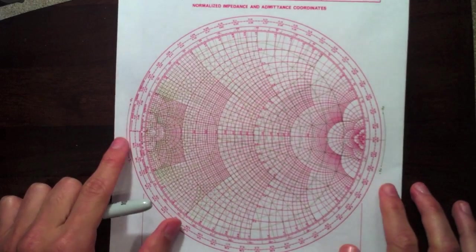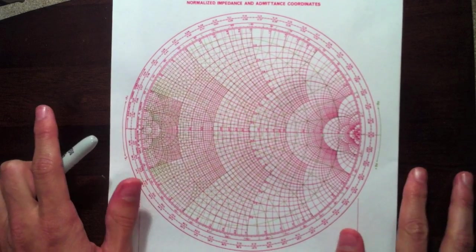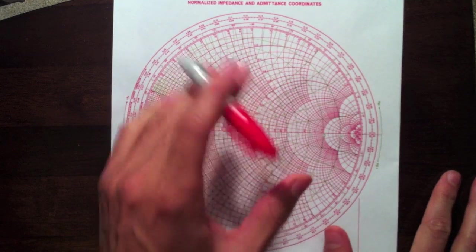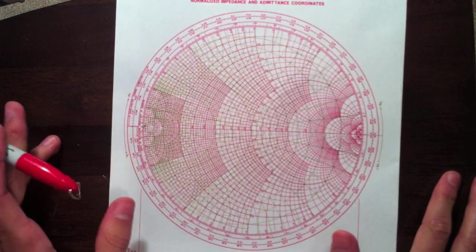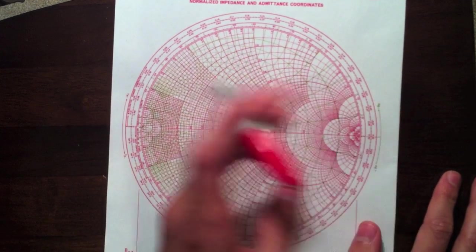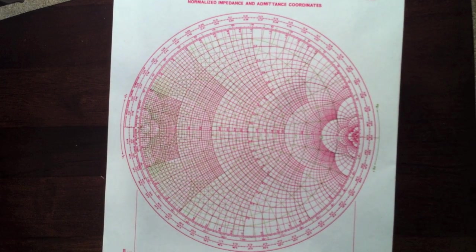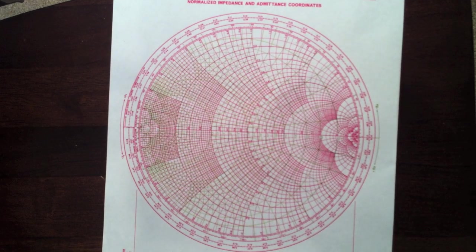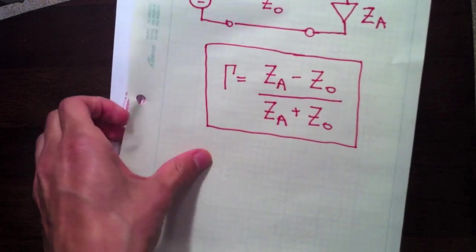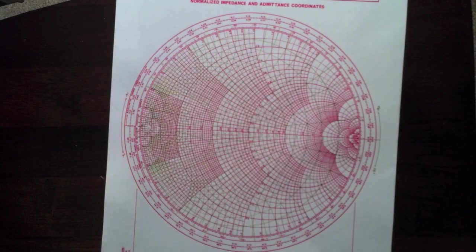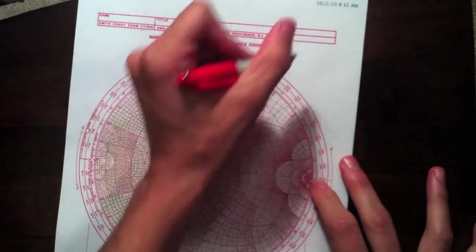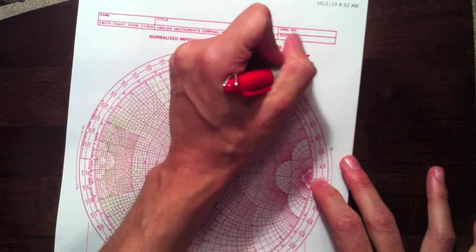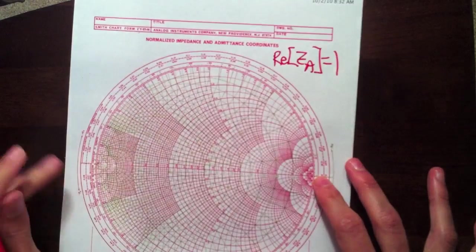Okay, so let's look at this Smith chart here. So where does all these crazy lines come from? So we know the reflection, this is just any point on here is a reflection coefficient, real part, imaginary part. So since we know that gamma is a function of the antenna impedance and the characteristic impedance, suppose we're interested in real part of the antenna impedance equals one.